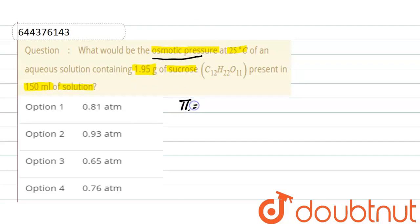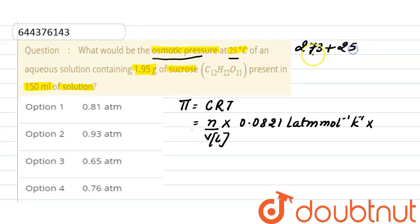is pi. Osmotic pressure is denoted by pi equals CRT, where C is the concentration in terms of molarity. And what is molarity? Number of moles divided by volume in liter. R is the gas constant which has a value 0.0821 liter atmospheric per mole per kelvin. Into temperature. Here is given in degree Celsius so we will convert it into kelvin by simply adding 273 and this will be 298 kelvin.